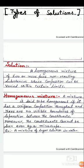Number two: What is homogeneous mixture? A mixture is said to be homogeneous if it has a uniform composition throughout and there are no visible boundaries of separation between the constituents. Moreover, the constituents cannot be seen even by a microscope.